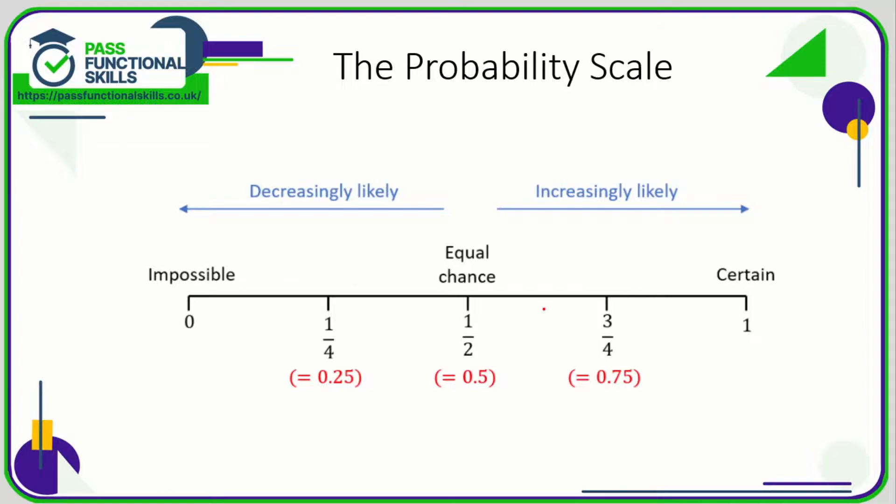Let's take a look at probability. Probability can be expressed on a probability scale from zero to one. Zero means the event is completely impossible and one means it is 100% definite.